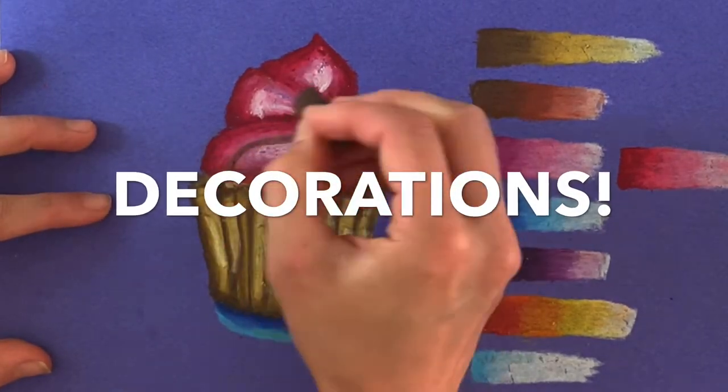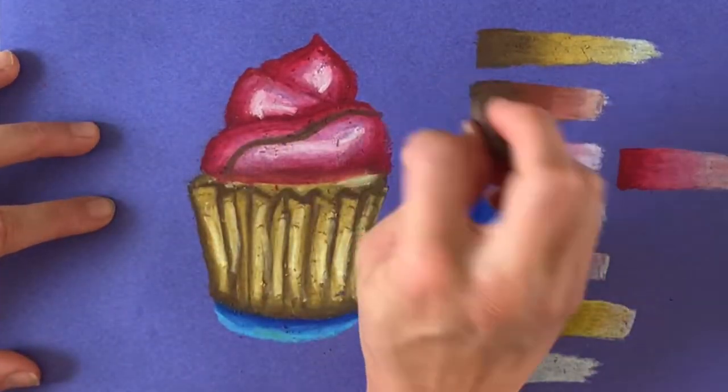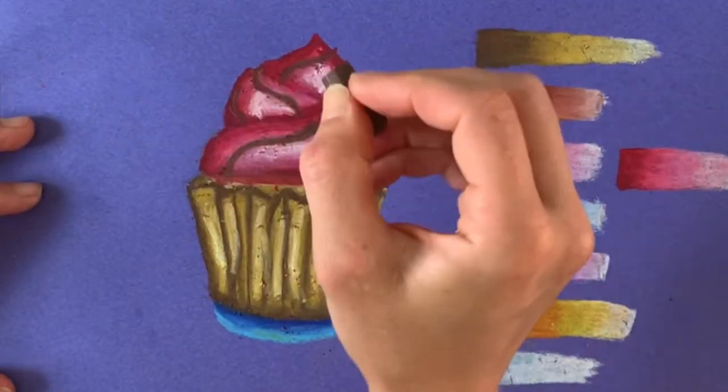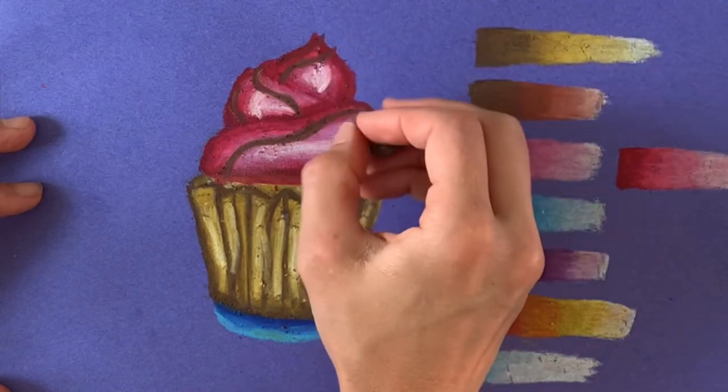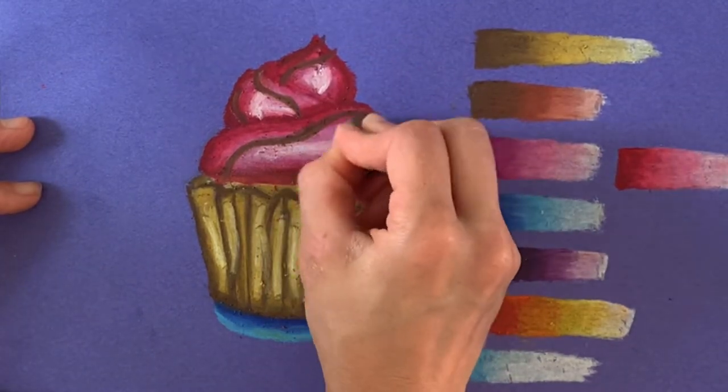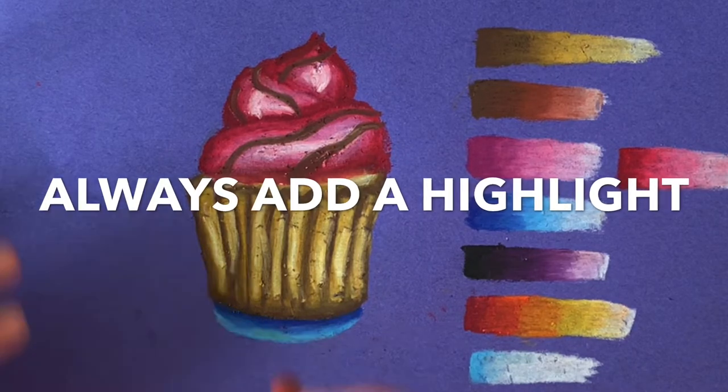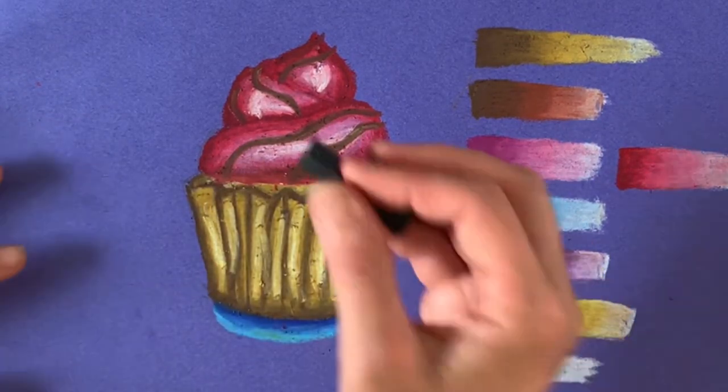Decorating your cupcake is one of the most fun parts of this artwork. Sprinkles, icing drizzles, Oreos, strawberries, a cherry on top—really anything you can think of, you can add as decoration. There's just one simple rule to follow: always add a highlight and add a gradient when you can.